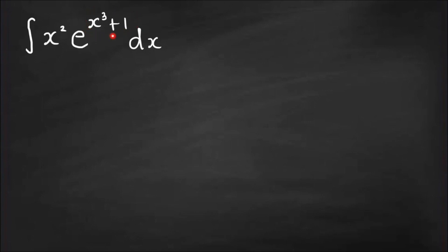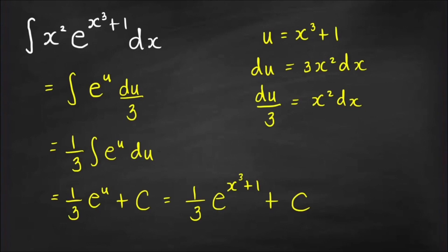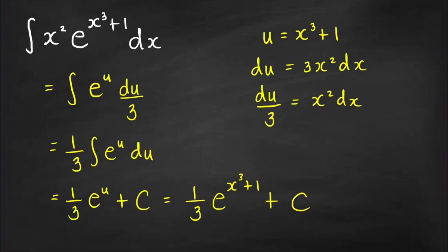The obvious substitution here is u = x³+1. With this substitution, we can write e^(x³+1) as e^u. Now we need to write x²dx in terms of u. From the substitution equation, du = 3x²dx, so x²dx = du/3. Moving the constant factor outside, we get (1/3)∫e^u du, and since ∫e^u du = e^u, we have (1/3)e^u + C.